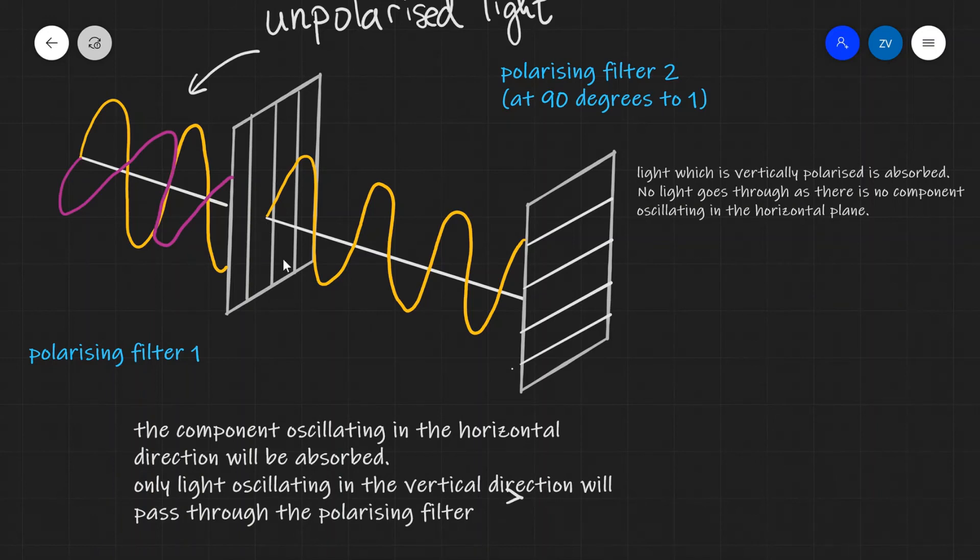So the first one, you can see it had a vertical orientation, and this one has a horizontal orientation. In this case, light which is vertically polarized will be absorbed. So this means that no light is going to go through,